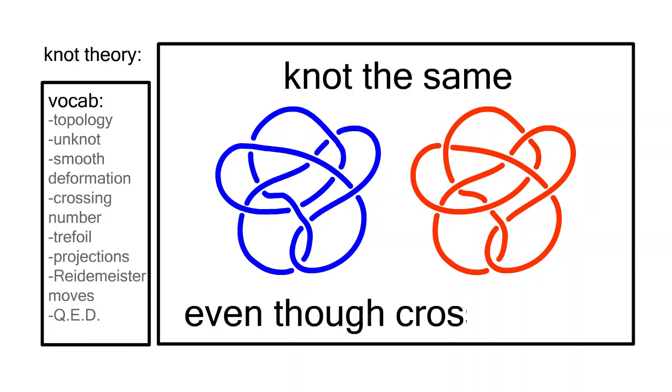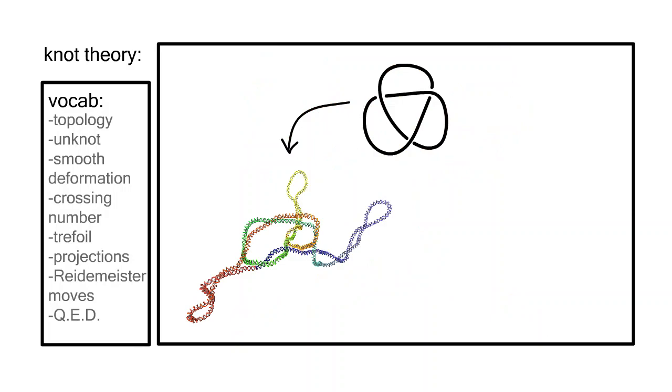Knots can be found in nature, in the structure of both DNA and the sun's corona, but they also have potential technological applications.